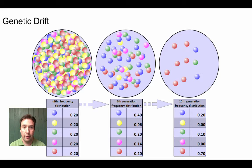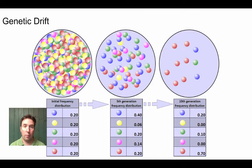Another factor we can talk about is genetic drift. In genetic drift, we start with an initial population that has a very even distribution of five different color phenotypes, and by chance we blindly select different colors. As a result of that chance selection from the initial population, we get a different distribution in the next generation. We blindly pick again and again see a different distribution, and over five to ten generations you'll see the shift. The key thing with genetic drift is that it is a component of chance. A lot of times this is tied to the idea of a founder effect.